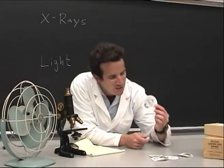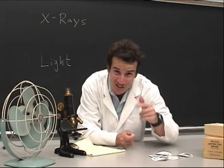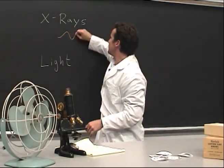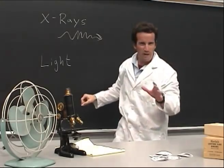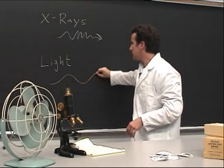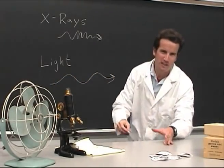But why did she have to use X-rays? Well, it turns out that the wavelength of X-rays is so much shorter than the wavelength of visible light that you can make images of objects that are that much smaller.